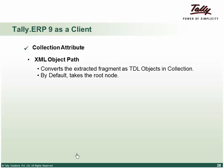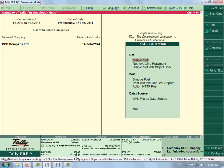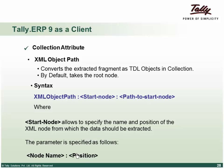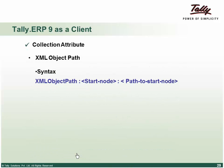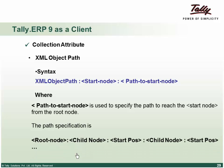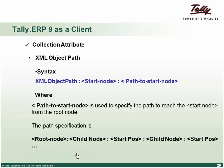We can also retrieve a fragment of a specific XML object by providing a path specification using the 'Start Node' and 'XML Object Path'. The Start Node attribute allows specifying the name and position of the XML node from which data should be extracted. The XML Object Path syntax is: root node, colon, child node, colon, start position, colon, child node start position — navigating down until you reach the start node.